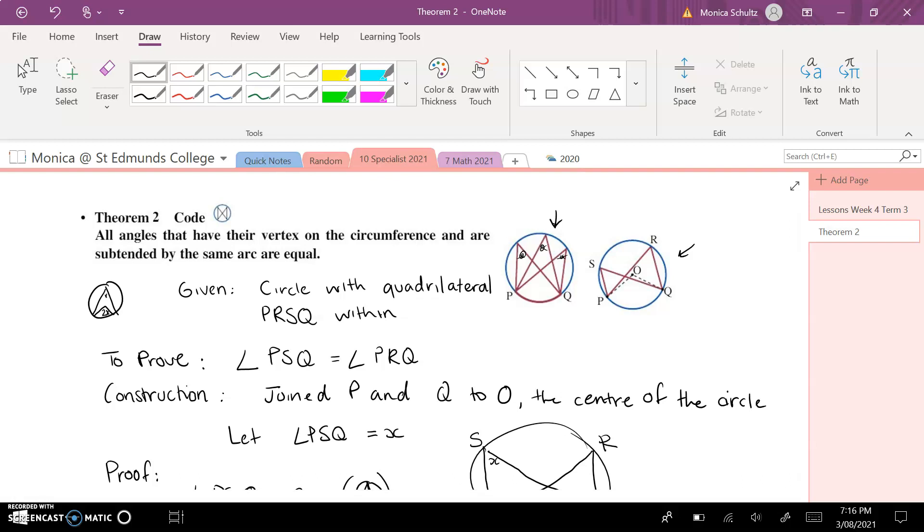So if we're setting it up following our proof structure then we have that the given is a circle with a quadrilateral PRSQ within. And I did mention within the other video that what we technically would call that is a cyclic quadrilateral, but we don't quite go into that yet.